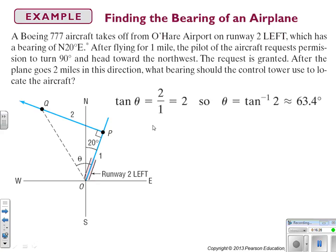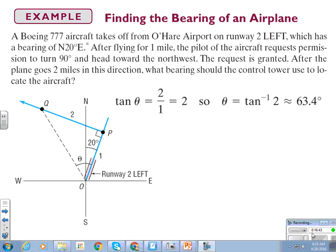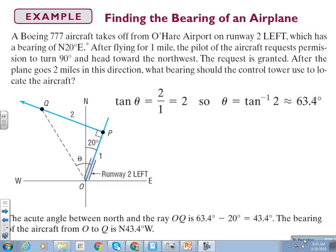Is that our bearing? This angle theta from OP is 63.4. The bearing is not 63.4 degrees, because that includes the 20 degrees here. Our angle for our bearing that we use is from the north-south line to our plane. So, we have to subtract out the 20 degrees. So the bearing from O to Q is north 43.4 degrees west.